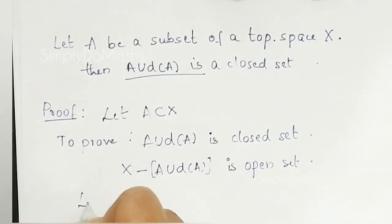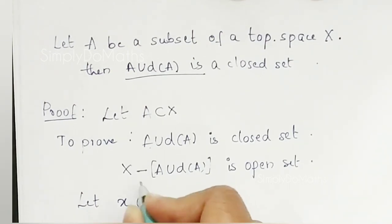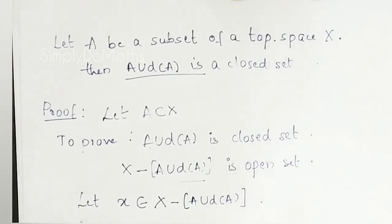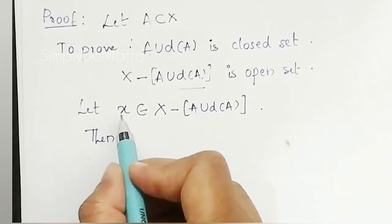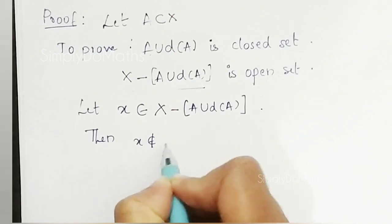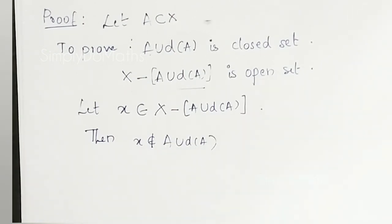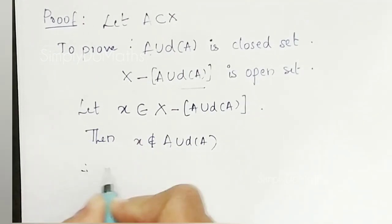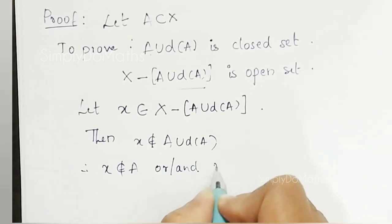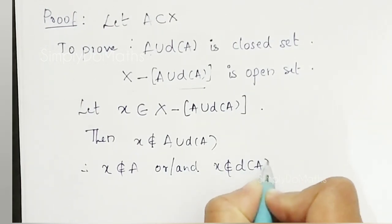For this, let us consider any element, say small x, which belongs to the open set capital X minus A union derived set of A. Then x does not belong to A union derived set of A. That is, x does not belong to A and x does not belong to the derived set of A.